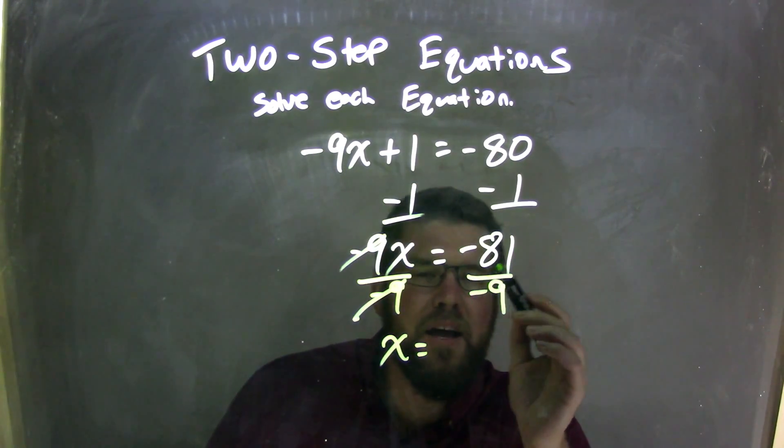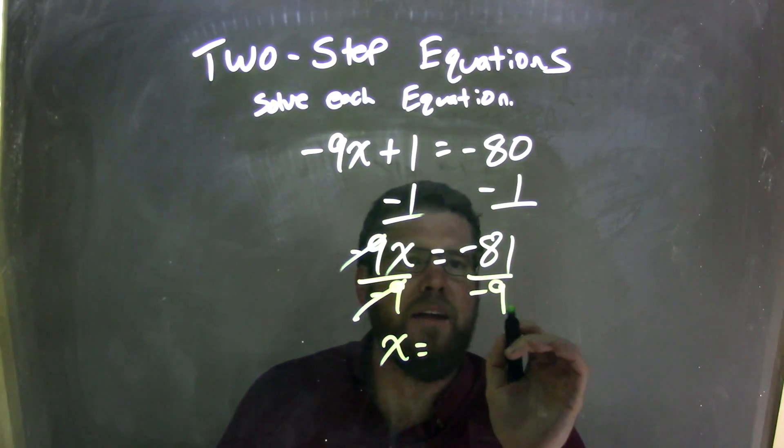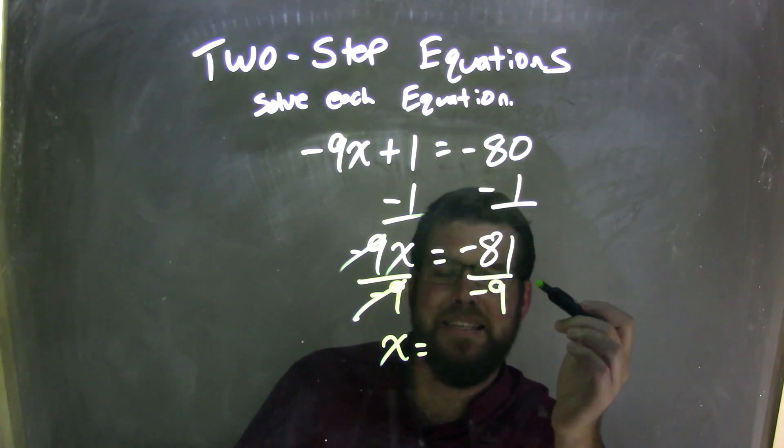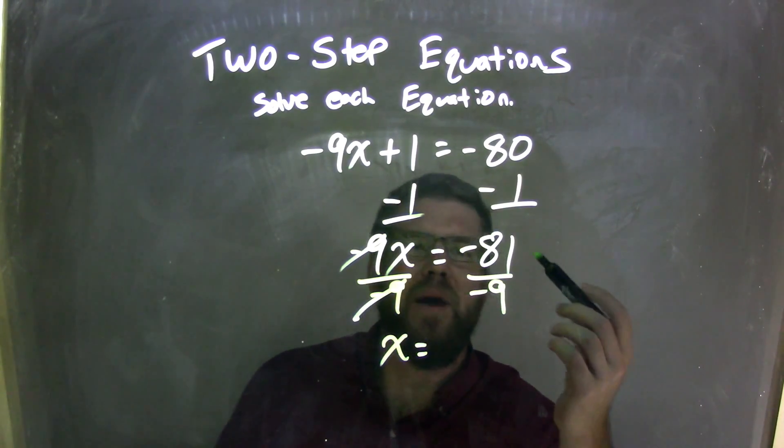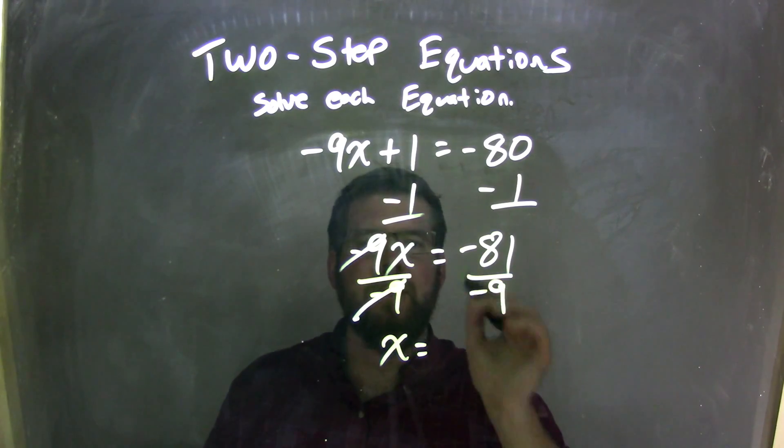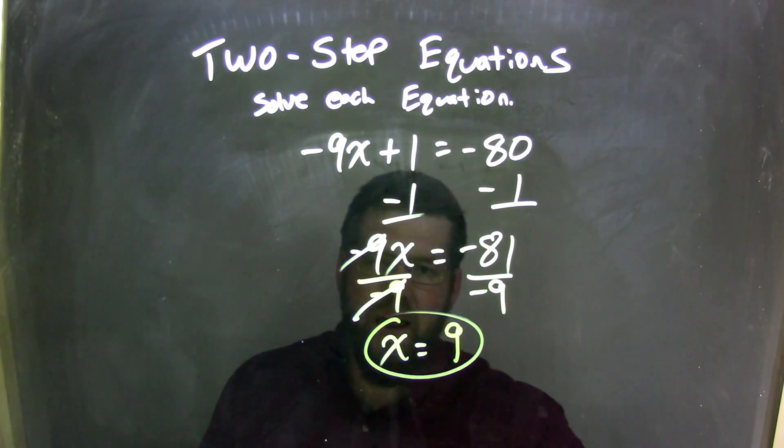Now we've got to think about it. A negative divided by a negative is a positive, so we have a positive final answer. 81 divided by 9 is 9, right? Because 9 times 9 is 81. So negative 81 divided by negative 9 is positive 9, and x equals 9 is my final answer.